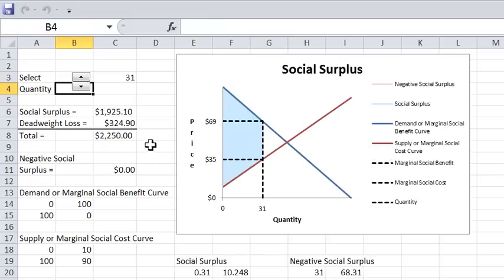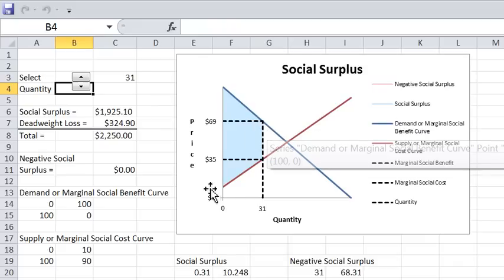We remember from calculus that the area under the curve gets back the function. So the area under the blue line represents the social benefit. The area under the red line represents the social cost. The shaded region in light blue here is the difference between those two and that is called the social surplus. We're measuring the net of social benefit minus social cost—that is the social surplus.